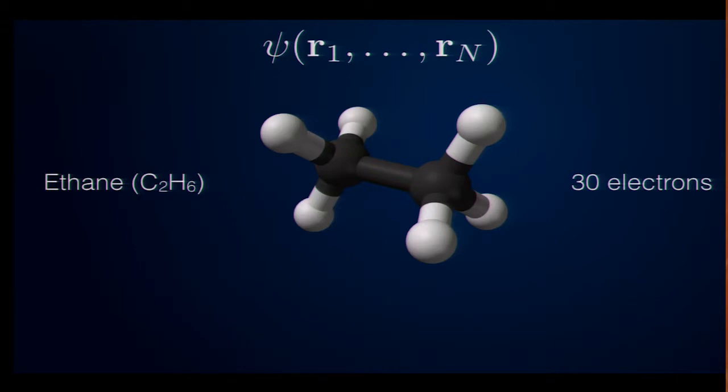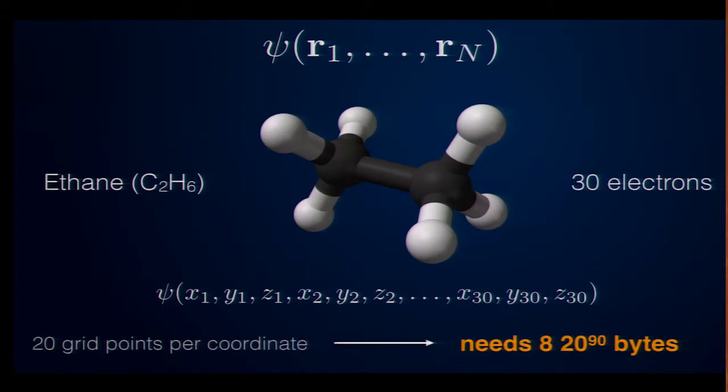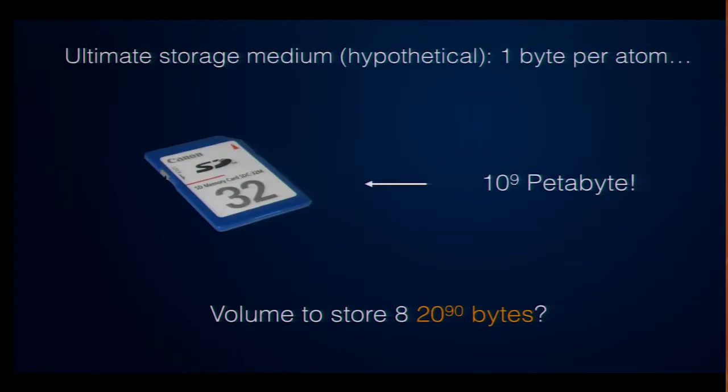So, this strange wave function depends on the coordinates of all the electrons in this electron cloud. For 30 electrons, this makes 90 coordinates in three-dimensional space. So, if you would now go ahead and naively discretize this wave function and if you would use 20 grid points in each coordinate direction, you would need 8 times 20 to the power of 90 bytes to store the function. This sounds like an awful large number. So, let me quickly illustrate how large it is. If you would have some kind of hypothetical future storage medium where you could store one byte on each atom, this is probably the highest storage density humanity can ever hope to achieve. This would allow you to store a billion petabytes on the volume of an SD card.